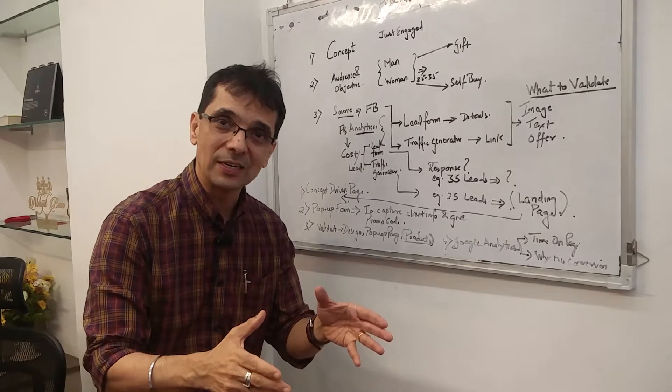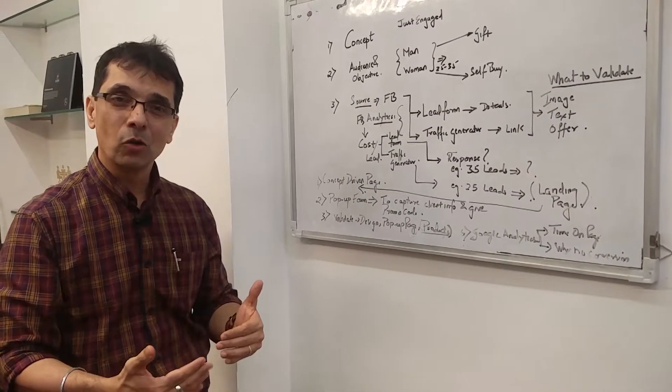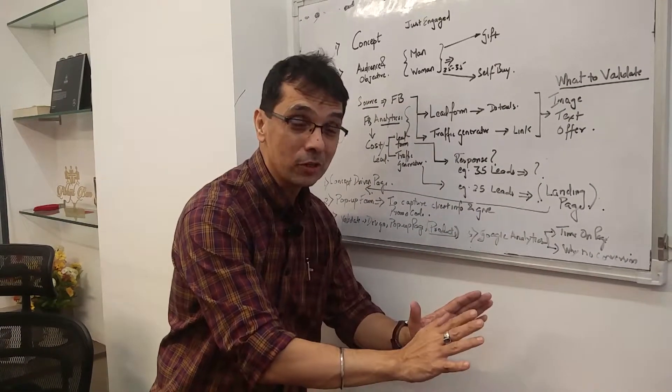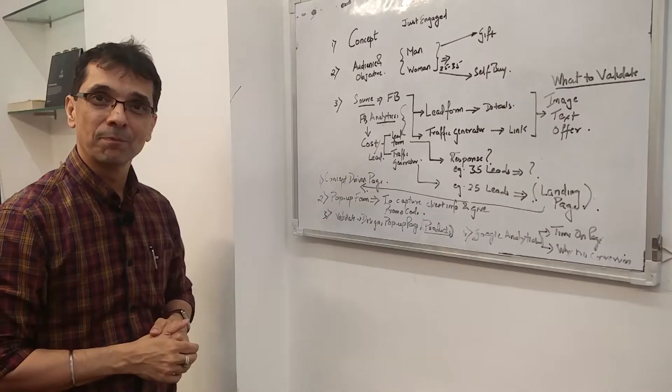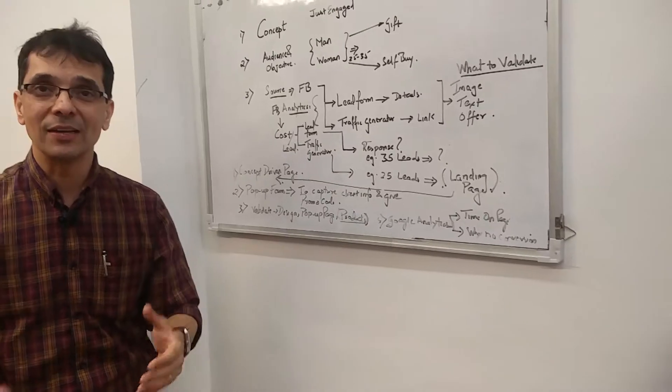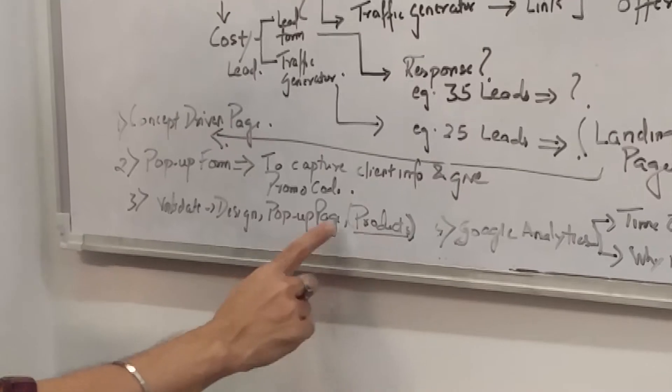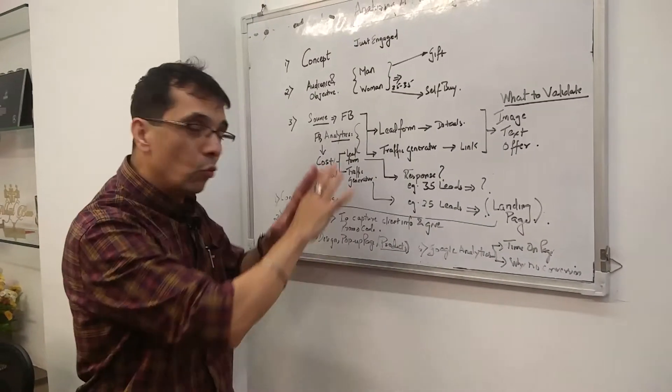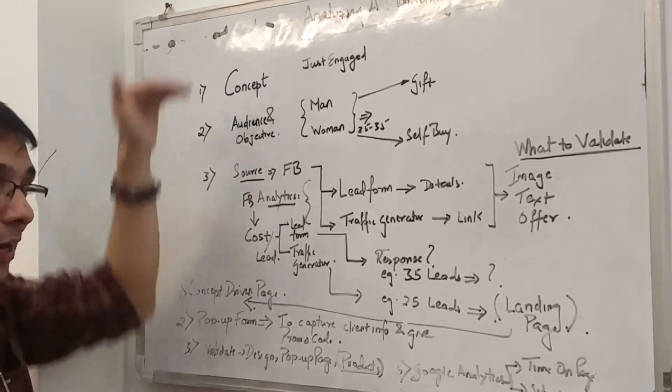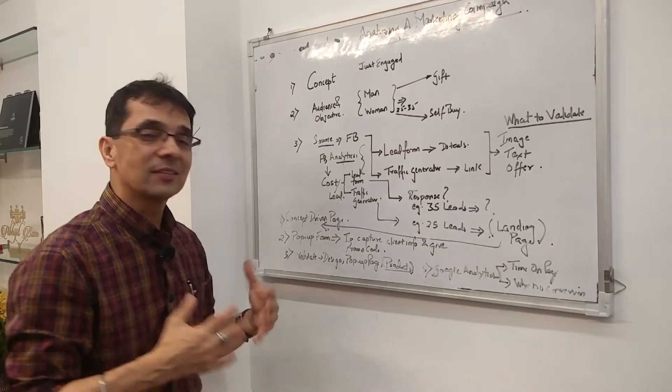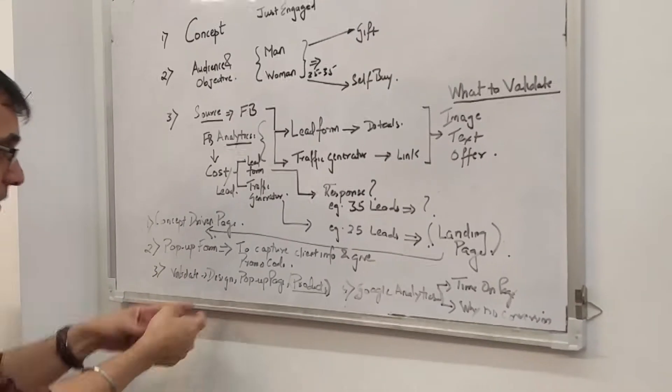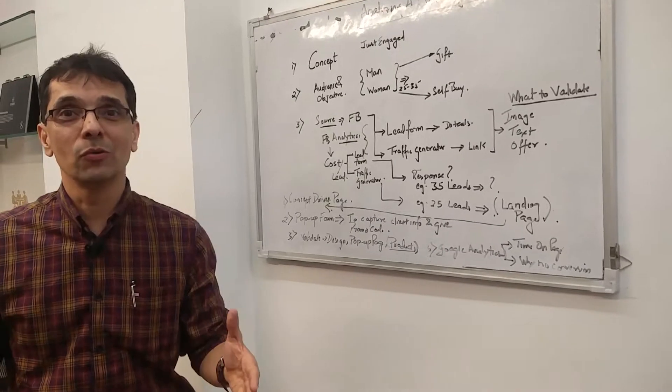So what's the way to capture their details? You put a pop-up form which comes up on the site. The pop-up form says, please give us your name and number because we're going to give you a promo code. Once the name and number is captured, the promo code gets showed right there. Now you still got to look at the analytics. How much time is the person spending on the page? If they spent two minutes but nothing is happening, they're not buying, where is the challenge? You got to validate the design, validate the pop-up page, and validate the product itself. Multiple validations from concept all the way till execution.